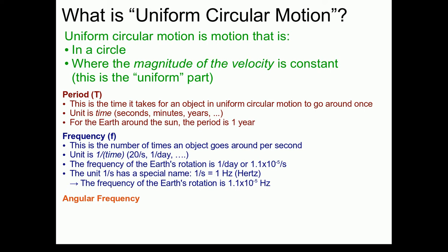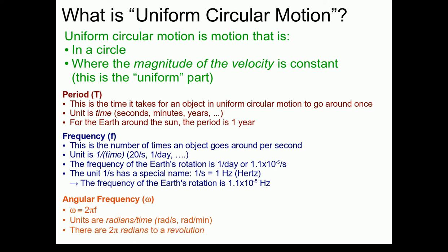Another frequency you might come across is the so-called angular frequency, represented by the Greek letter omega. Angular frequency is defined as 2π times the regular frequency we were just discussing — so it's a very related quantity, just multiplied by a factor of 2π. Physicists like this 2π for a host of different reasons. The units in this case are radians over time: radians per second, radians per minute, radians per hour, and so on. An important fact is that there are 2π radians to a revolution, so when an object goes all the way around a circle, it undergoes 1 revolution or 2π radians. In essence, this is the definition of the angular measurement of radians.